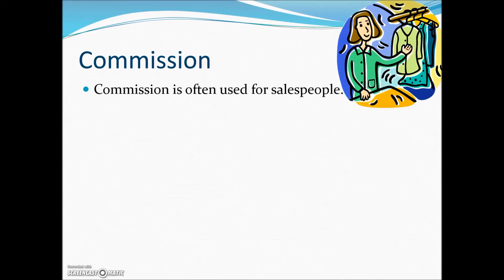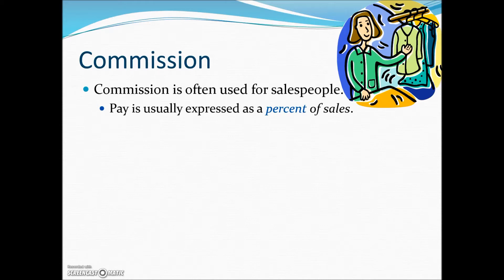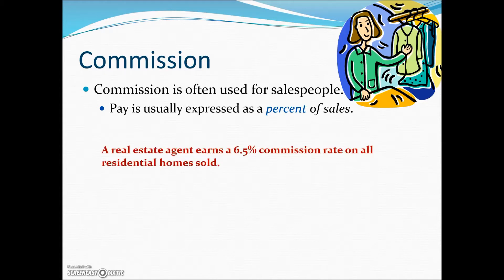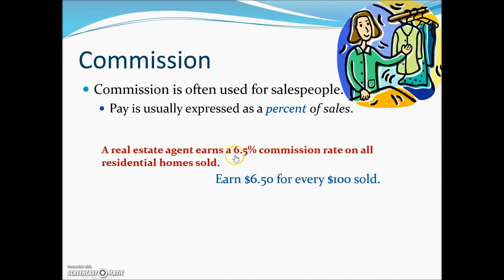A commission rate pays a salesperson either a fixed percent of sales or a fixed amount per item sold. Commissions are designed to produce maximum output from the salesperson since pay is directly dependent upon sales. Here we have an example of a straight commission where the salesperson is paid a fixed percent of sales. A 6.5% commission rate means they will earn $6.50 for every $100 sold.